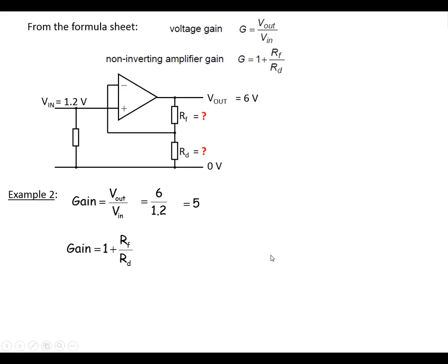So if we use this formula here, gain equals 1 plus RF over RD, if we just take the 1 across to the other side of the equation, put in the numbers, so the gain is 5, subtract 1, we end up with 4. So RF divided by RD is equal to 4. We've got to choose suitable resistors. I would always choose something nice and easy for RD, so let's go for 10k.